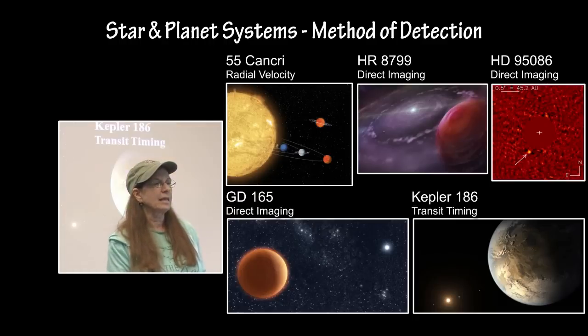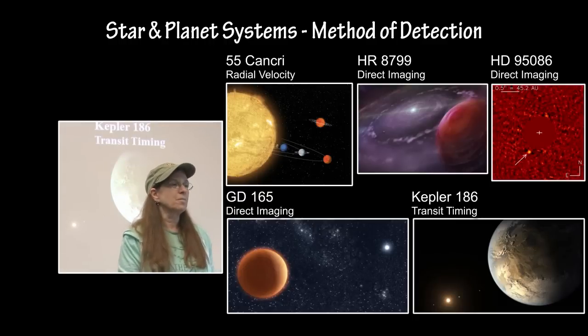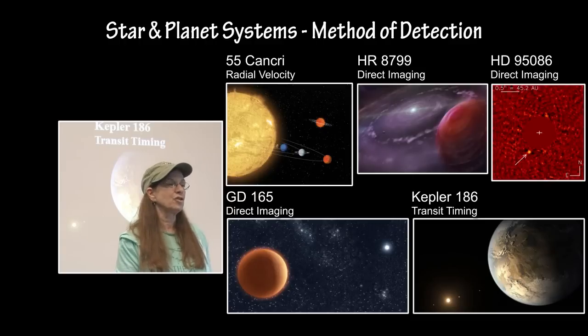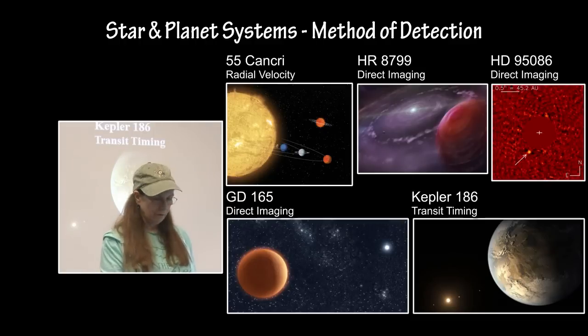If you look at the planet star systems, three of them are detected by direct imaging, one by transit timing, and one by radial velocity.